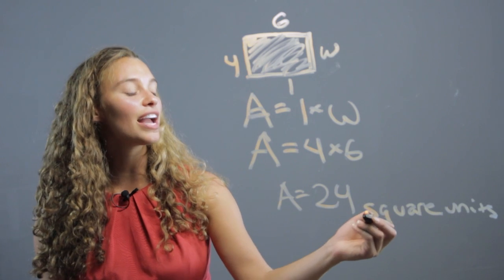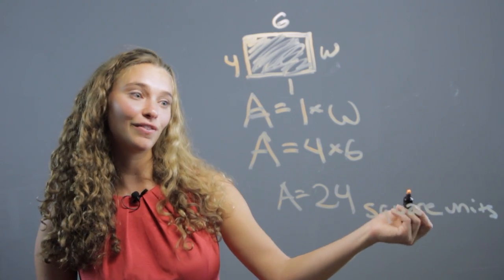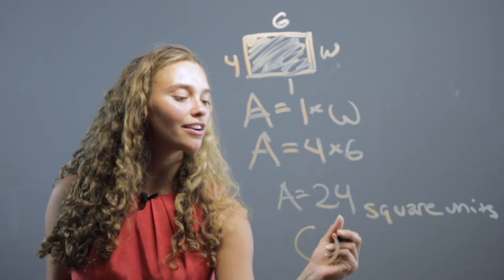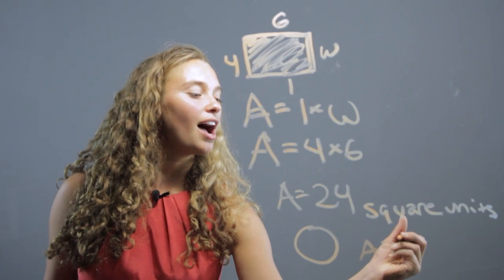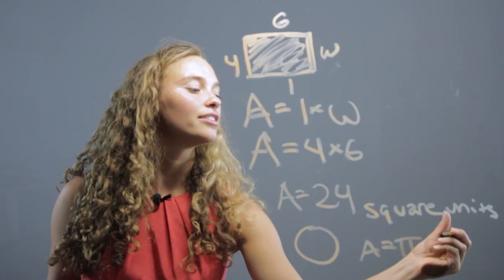But in area, you have to write feet squared. That's very important. If you have the area of a circle, the formula is pi r squared.